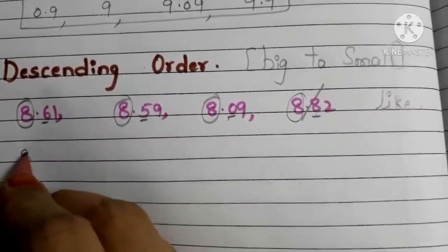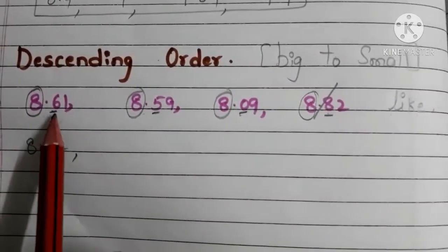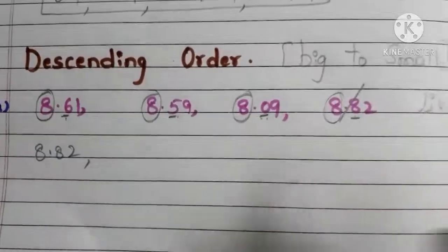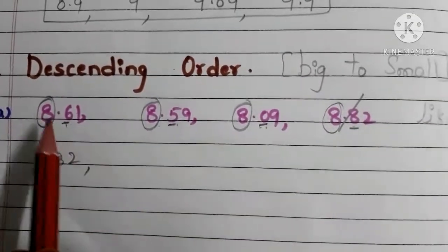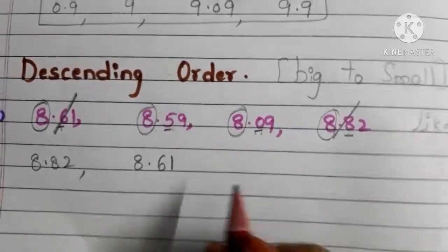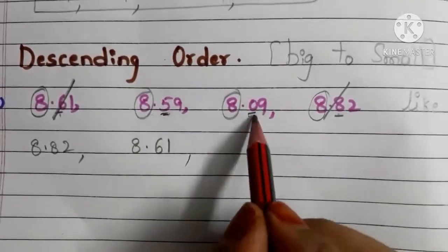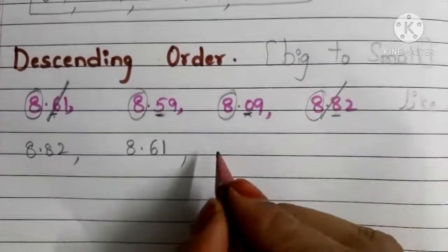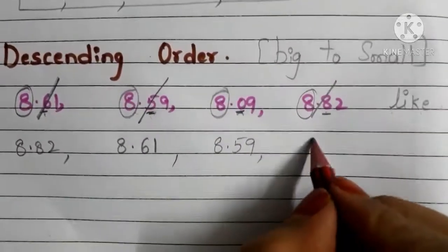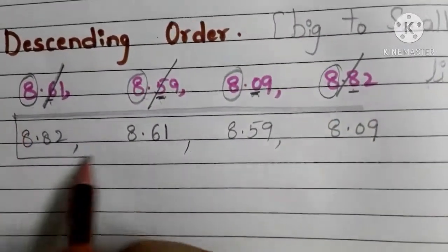Strike off 8.82 and write it here. Now compare the 10th digits of the remaining numbers: 6, 5, and 0. 6 is bigger, so 8.61 is the next bigger number. Strike off and write 8.61. Next bigger is 8.59 because the 10th digit is 5, while the remaining number has 0 in the 10th digit. So write 8.59. Finally we have 8.09. So this is the descending order of the given numbers.